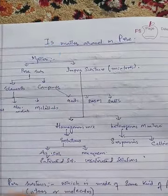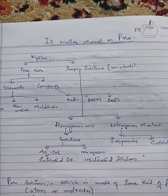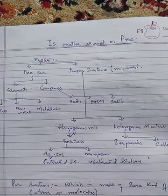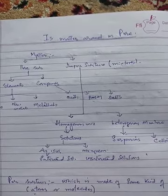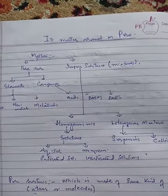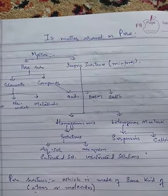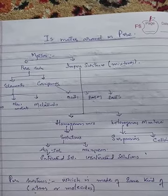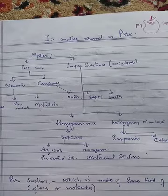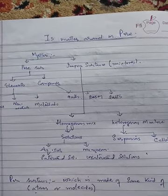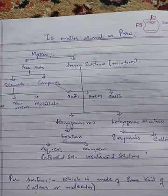In the previous lesson we studied that matter is any substance which occupies space and has a mass. To modify the definition, we define matter as the substance which is made up of small particles that we call atoms. So all matter is made up of fundamental particles — very, very small particles that we call atoms.